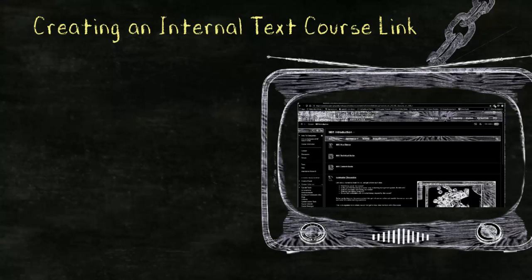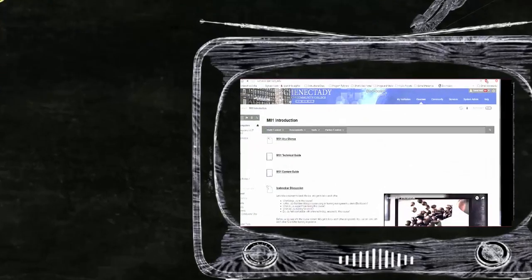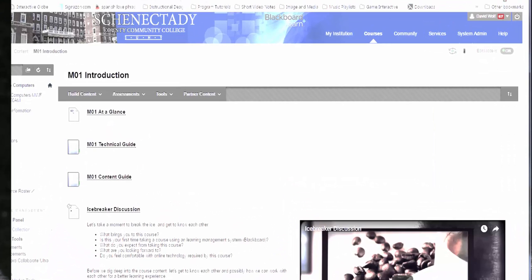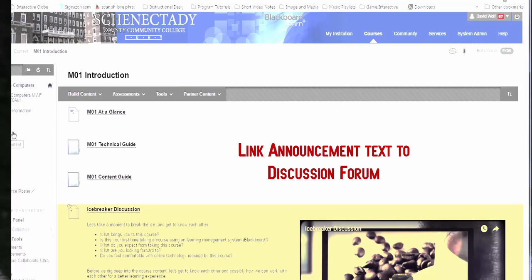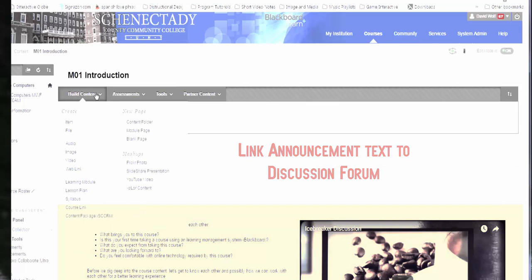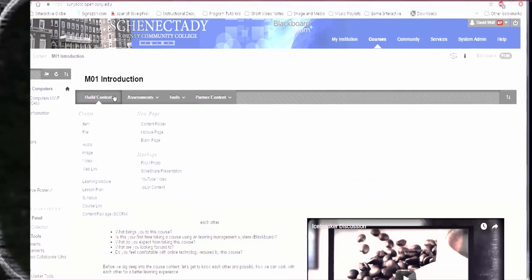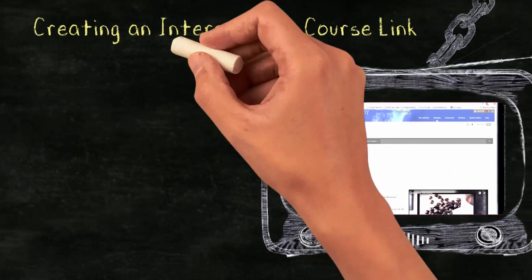This solution is limited. What if you want to add a link in some place other than within a content folder? For example, you want to create an announcement to remind students that they need to post within a discussion forum. It would be optimal if you could just link the text directly to the forum from the announcement. What you are looking for is an internal text course link.